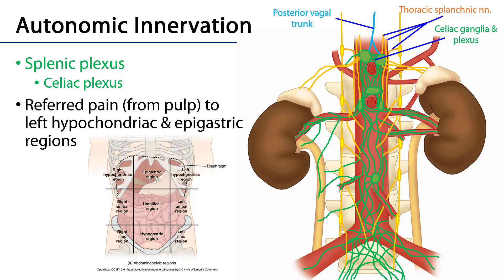Here we can see the celiac autonomic plexus and the ganglia receiving the thoracic splenic nerves as well as the posterior vagal trunk fibers. Referred pain specifically from the pulp of the spleen is going to refer to both the left hypochondriac region as well as the epigastric region. Pain from the capsule of the spleen may refer to either the left hypochondriac region, or if there is blood pooling along the edge of the diaphragm, to the left shoulder as well.